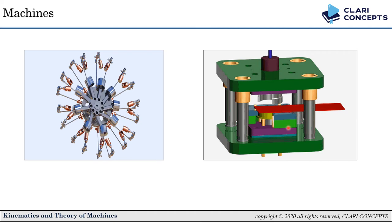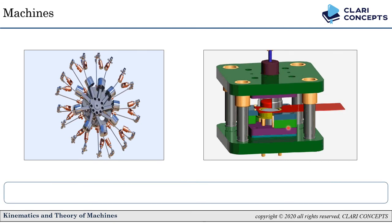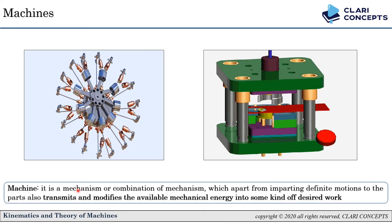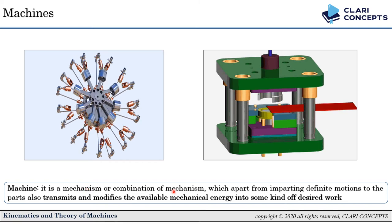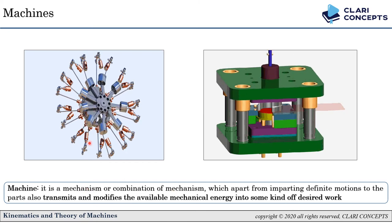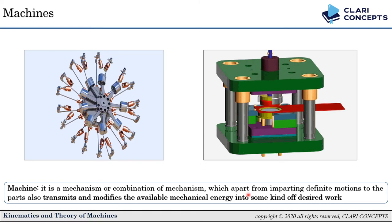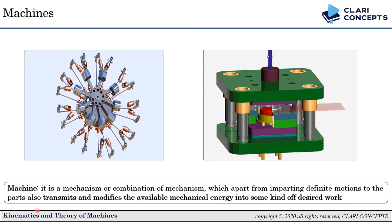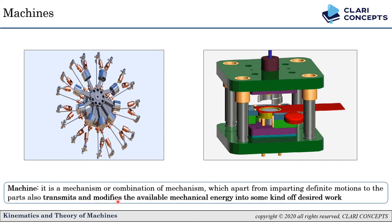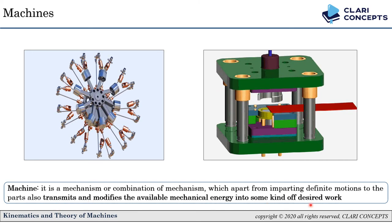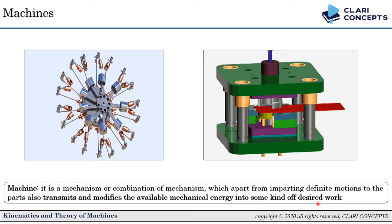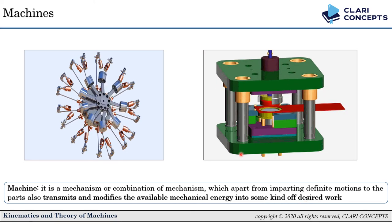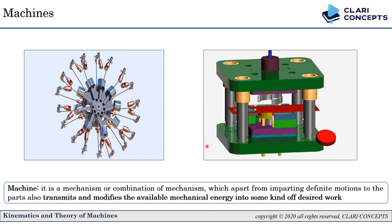So a Machine is defined as a Mechanism or combination of Mechanisms which, apart from imparting definite (predictable) motion to the parts, also transmits and modifies the available Mechanical Energy into some kind of desired work. There must be desired work output along with energy transmission for something to be called a Machine.